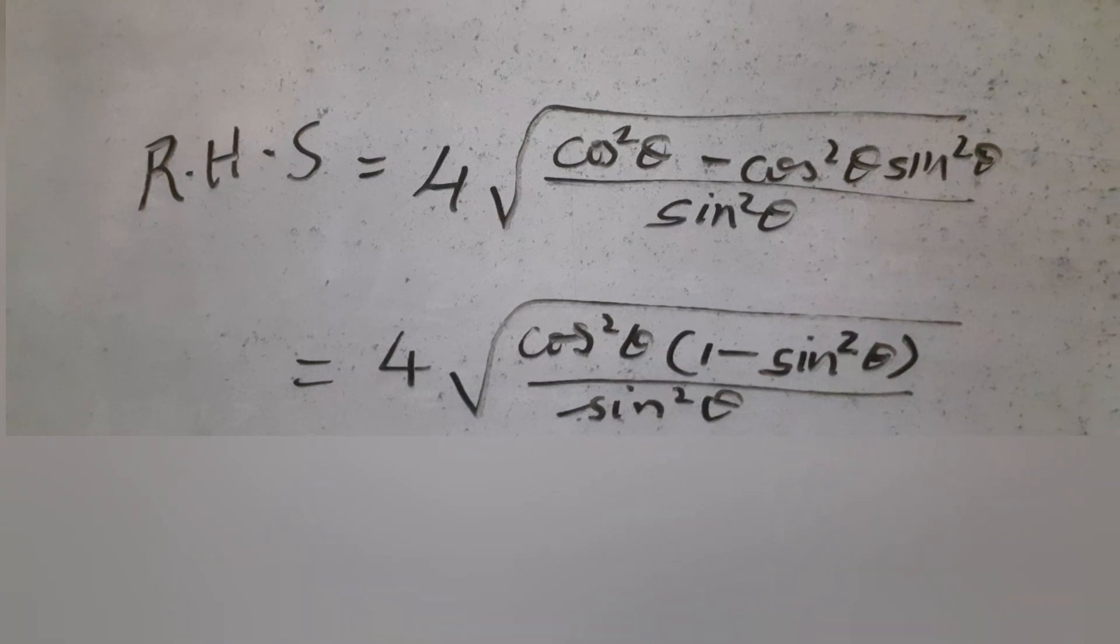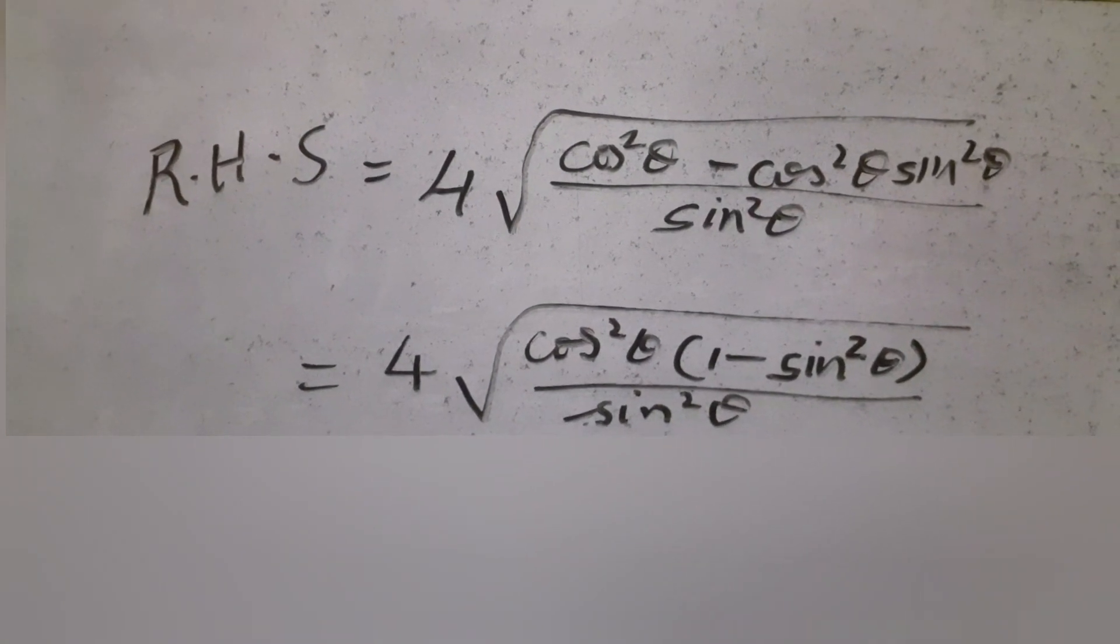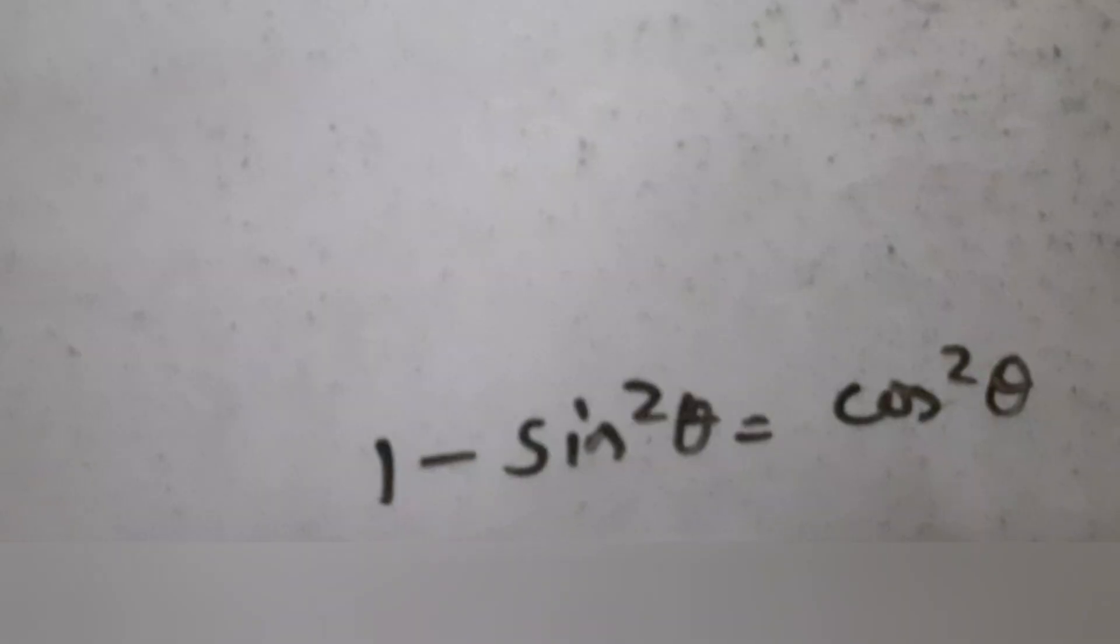We are left with a factor of 1 - sin² θ. Using the trigonometric identity, 1 - sin² θ becomes cos² θ.